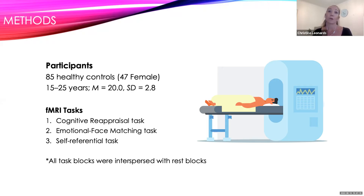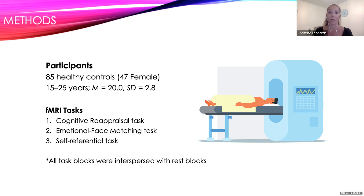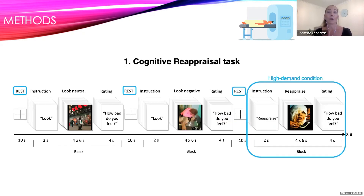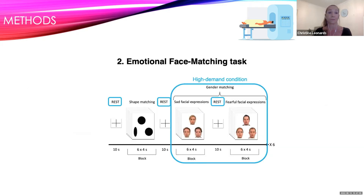We had 85 healthy controls who were scanned while completing three fMRI cognitive tasks. These tasks were all mapped to reflect task-related suppression against a resting baseline, meaning the tasks were interspersed with resting periods. The first task was a cognitive reappraisal task, which comprised a low demand condition where participants simply viewed negative or neutral images, and a high demand condition where participants used pre-learned cognitive reappraisal strategies to attenuate their emotional response to negative stimuli. In the emotional face matching task, the low demand condition required participants to match the orientation of shapes, and the high demand condition required matching the gender of faces presented with sad or fearful facial expressions.